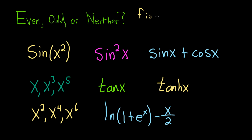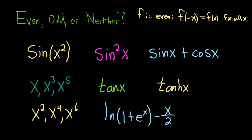f is even. This basically means that when you plug in negative x into your function, you just get back f of x. And this has to be true for all x in the domain of the function. So even functions eat negative signs, and these tend to be symmetric about the y-axis — they always are.